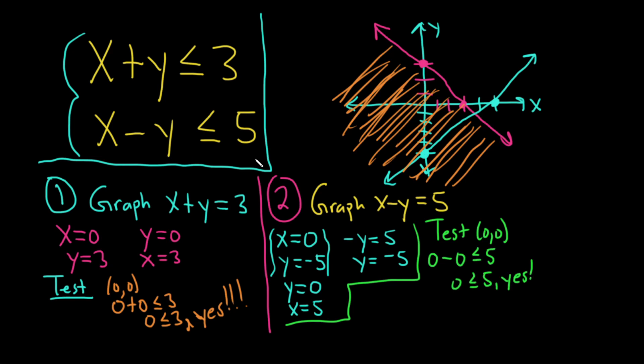So we plugged in zero, zero here. And this was our test point right here, right? Zero, zero. And we're testing the inequality that's partially represented by this line. The line represents the equality that corresponds to this inequality. So because we're working with this one here and it's true, we're going to shade up here. Okay. So now we just shade up here. Okay. If it was false, we would shade down here.